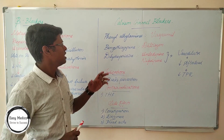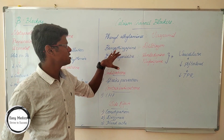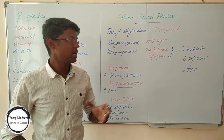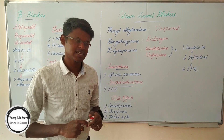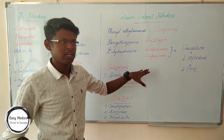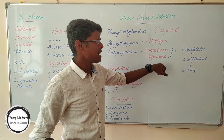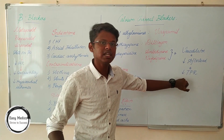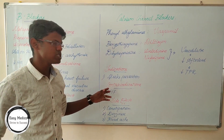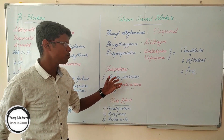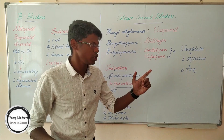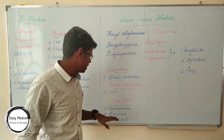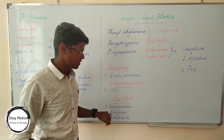Calcium channel blockers are classified into phenylalkylamines, benzodiazepines, and dihydropyridines. Examples: phenylalkylamines — verapamil; benzodiazepines — diltiazem; dihydropyridines — amlodipine and nifedipine. These act as vasodilators, which ultimately cause a decrease in afterload and a resulting decrease in total peripheral resistance. Indications include stroke prevention and recurrent stroke prevention. Contraindications: these should not be used in congestive heart failure. Side effects include constipation, dizziness, and headache.